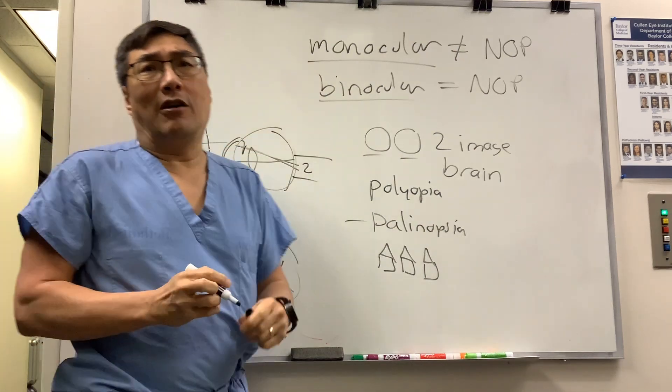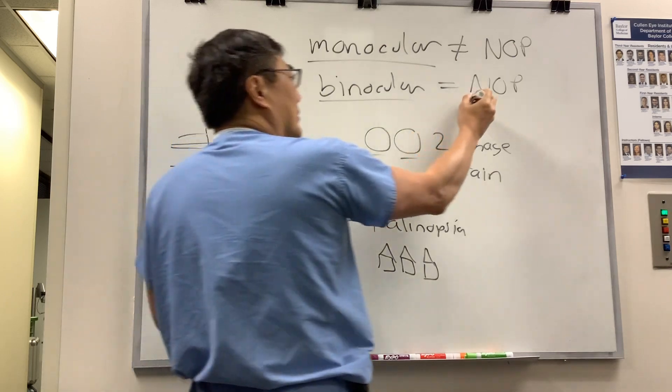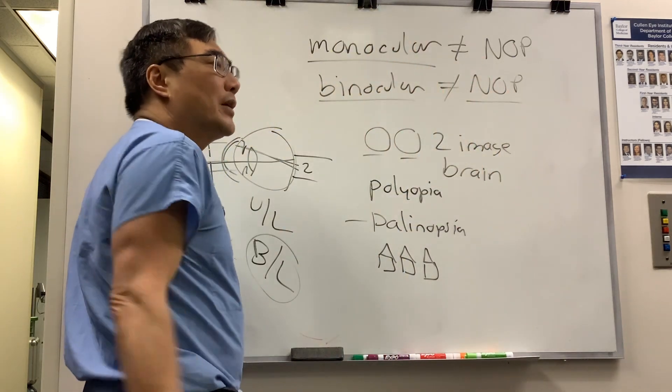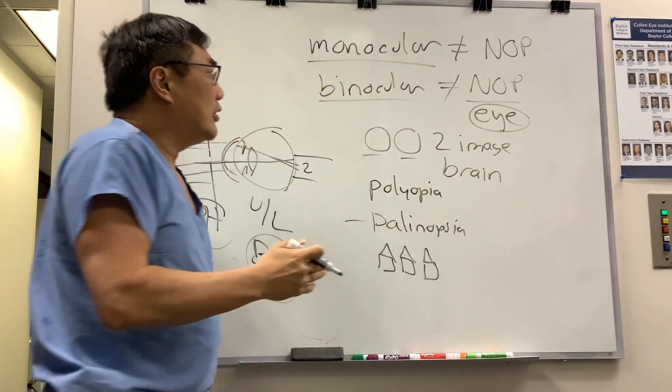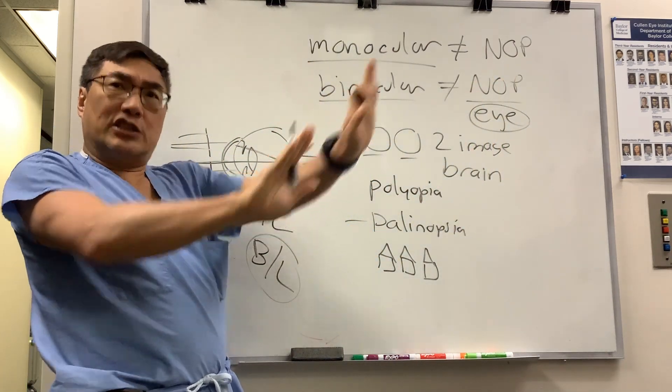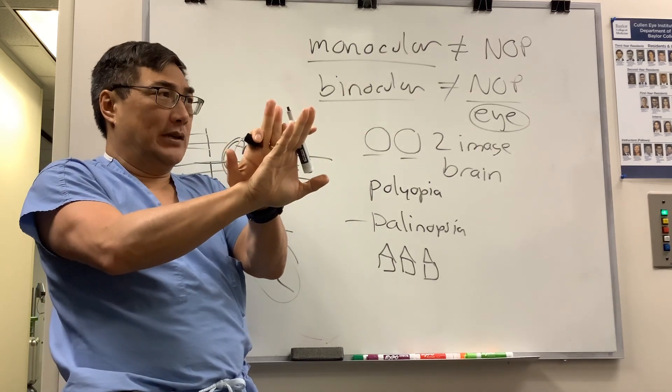Now binocular is a little harder because binocular means your eyes aren't aligned. So when would binocular not be neuro-op? Well, there are some things in your eye that can make you get the image disparate.